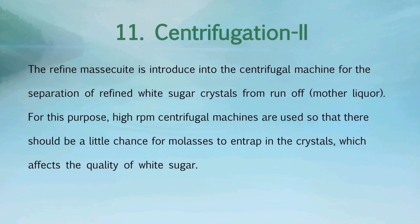The next process is the centrifugation of refined massecuite. The refined massecuite is introduced into the centrifugal machine for the separation of refined white sugar crystals from the runoff named as mother liquor. For this purpose, high RPM centrifugal machines are used so that there is little chance for molasses to become entrapped in the crystals, which affects the quality of white sugar.